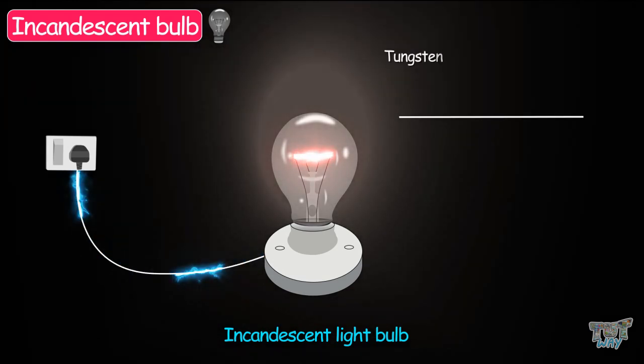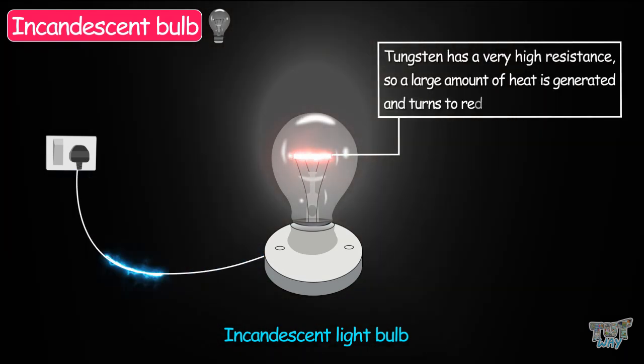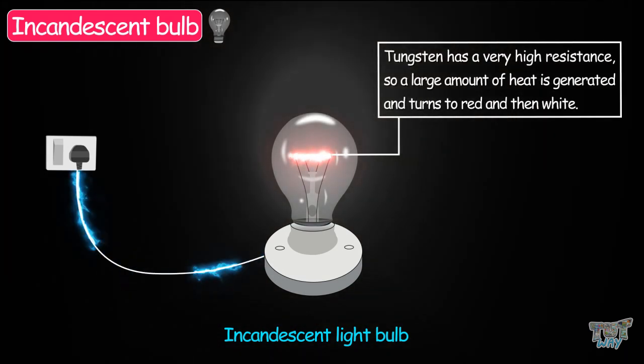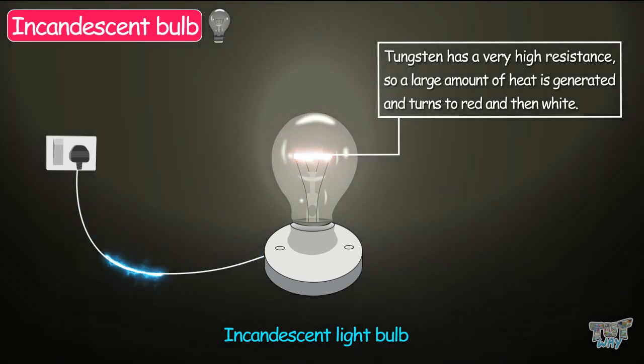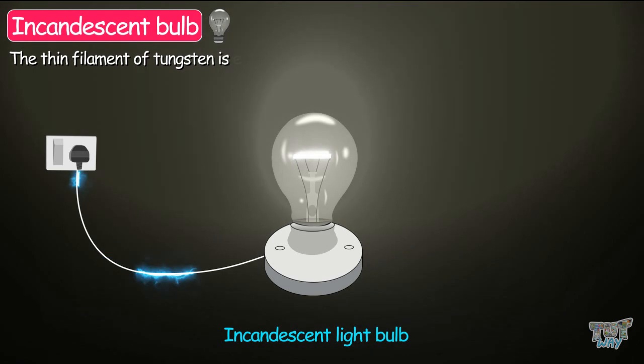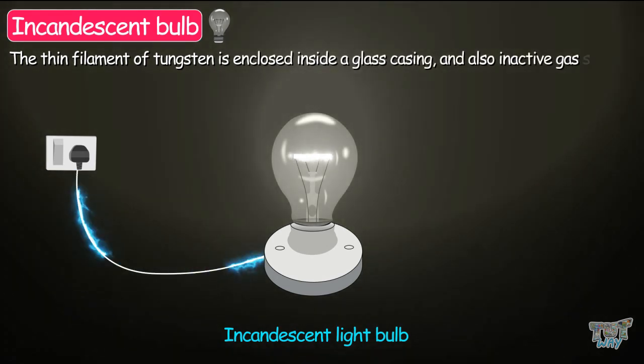And as we learned, it has a very high resistance. So a large amount of heat is generated and it turns red and then white. This thin filament of tungsten is enclosed inside a glass casing.